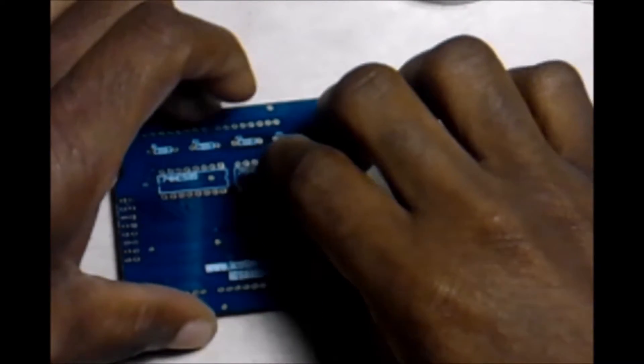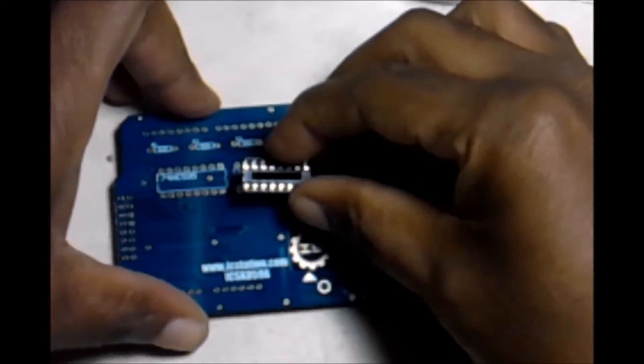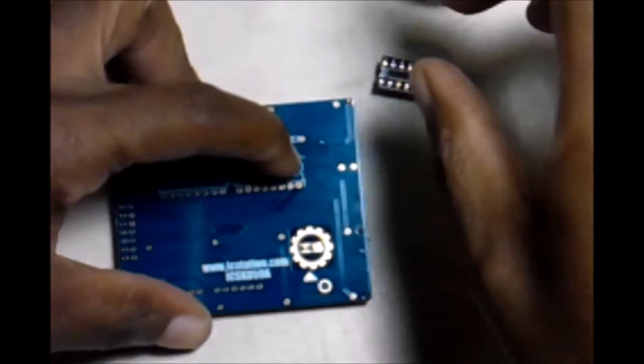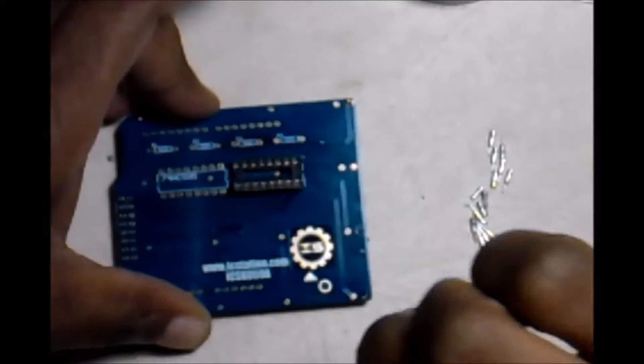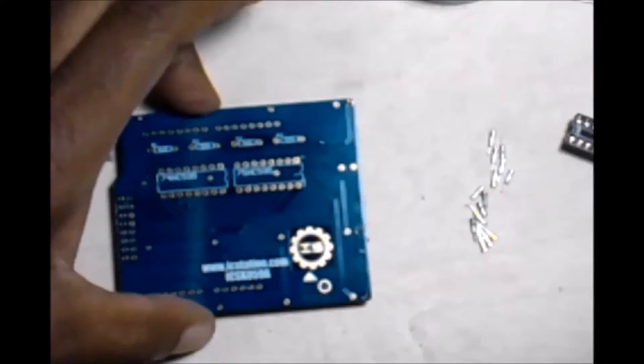And then you're going to solder it of course, and then the IC socket is going to sit on top of it. So you want to make sure to solder that first, because once you get this socket in, you're not going to be able to really solder it. So that is why we are doing these first.